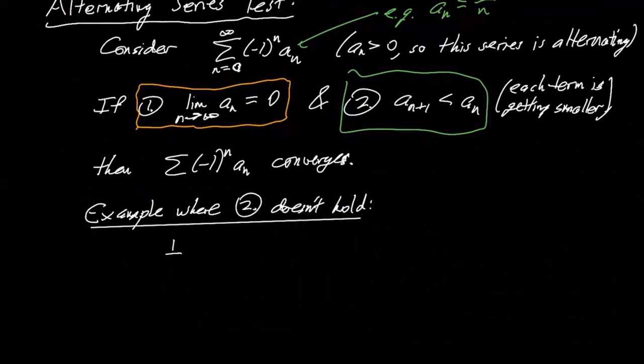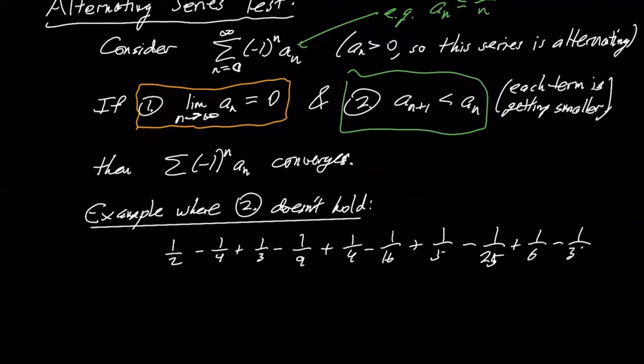I could do a half minus a quarter plus a third minus a ninth plus a quarter minus a sixteenth plus a fifth minus a 25th. Do you see what I'm doing here? I'm actually doing like basically one over n minus one over n squared plus one sixth minus one over 36, et cetera. So I'm just going to square, I'm kind of squaring each term and just subtracting off that.